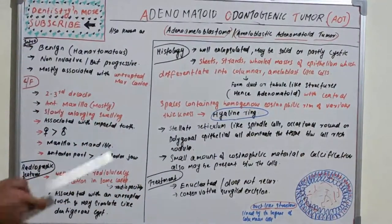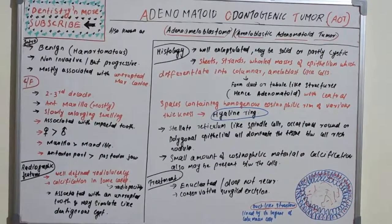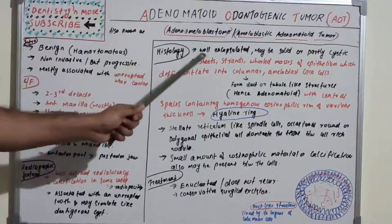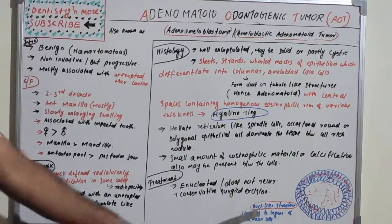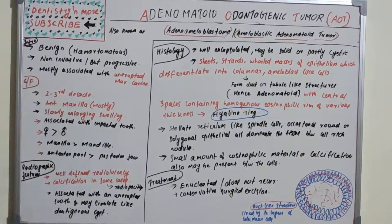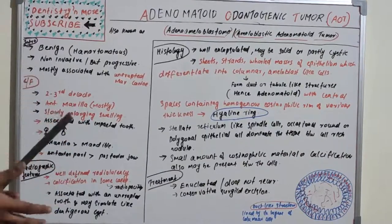Adenomatoid Odontogenic Tumor is also known as adeno-ameloblastoma or ameloblastic adenomatoid tumor. The two key points are: it is associated with an unerupted maxillary canine, and it has adeno duct-like or tubule-like structures with columnar cells at the borders. Treatment is conservative surgical excision — enucleation — rather than a radical approach, and recurrence is very rare.